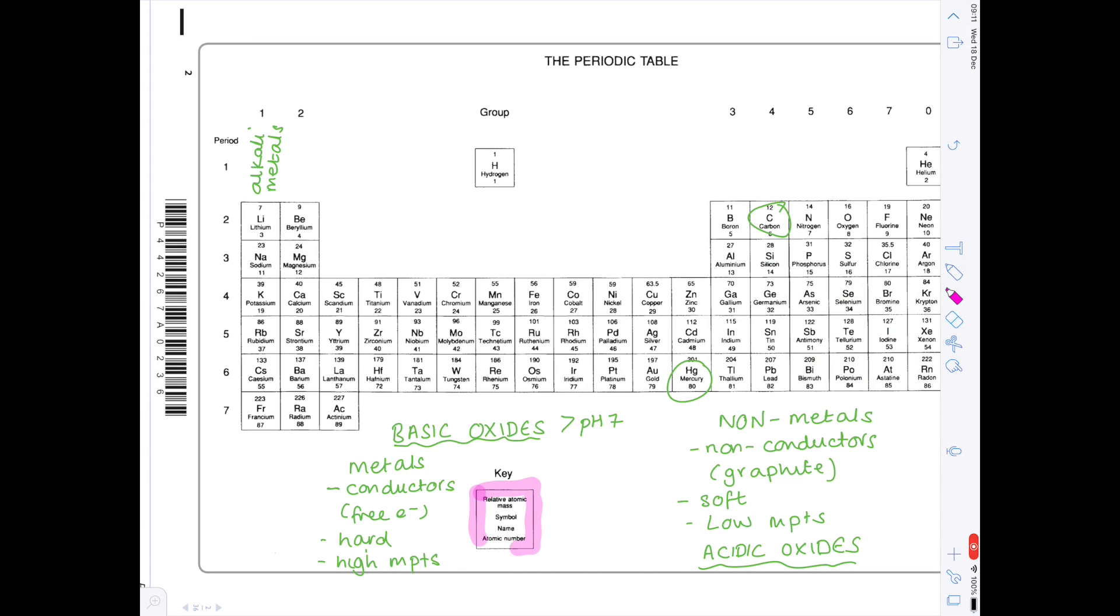Now if we look more closely at the key it's really important that you understand how this works. The top number we're told is the relative atomic mass, the bottom number is the atomic number. Now the atomic number equals the proton number and because elements are neutral it also equals the electron number. Why is that? Well that's because protons have a charge of plus one, electrons have a charge of minus one, so therefore we need to have equal numbers of protons and electrons in order for our atoms to be neutral.